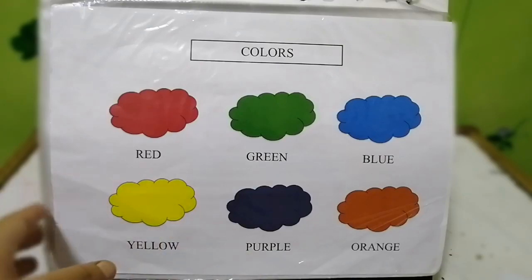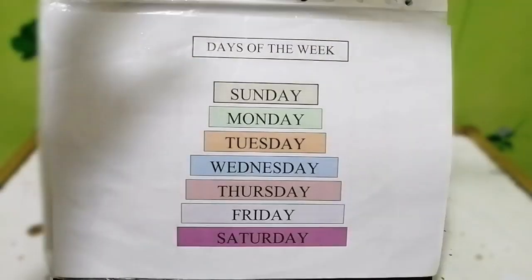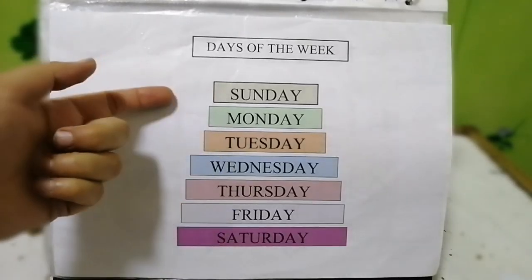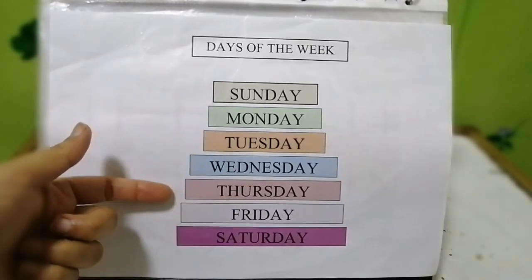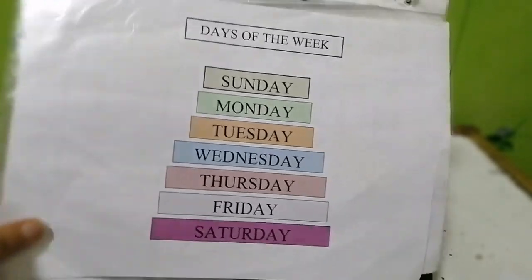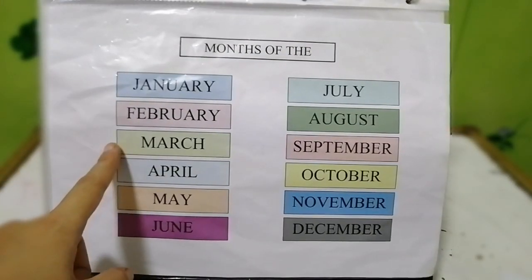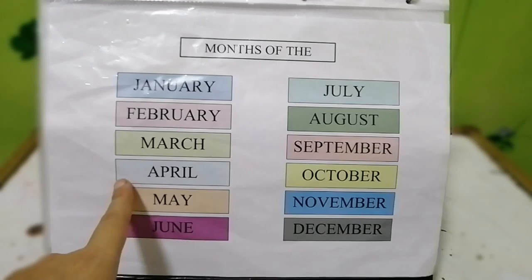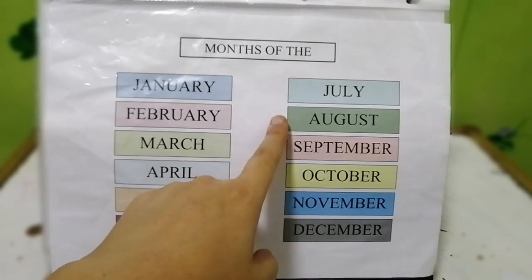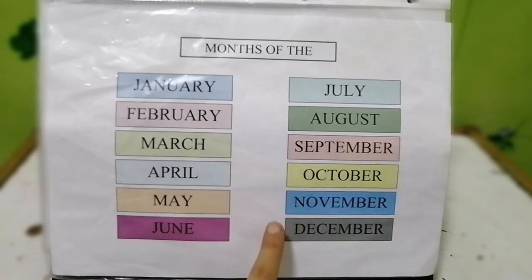Here we have days of the week: Sunday, Monday, Tuesday, Wednesday, Thursday, Friday, Saturday. And here are the months of the year — July, August, September, October, November, and so on.